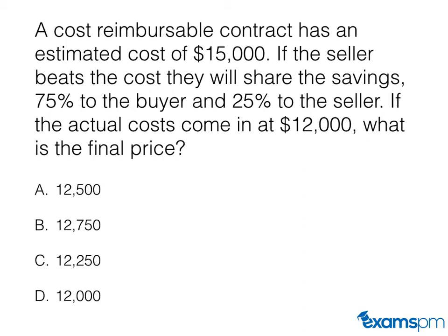Let's move on to our third question about cost reimbursable contracts. A cost reimbursable contract has an estimated cost of $15,000. If the seller beats the cost, they will share the savings 75% to the buyer and 25% to the seller. If the actual cost comes in at $12,000, what is the final price? Is it $12,500, $12,750, $12,250, or $12,000? Feel free to pause the video and calculate the right answer.